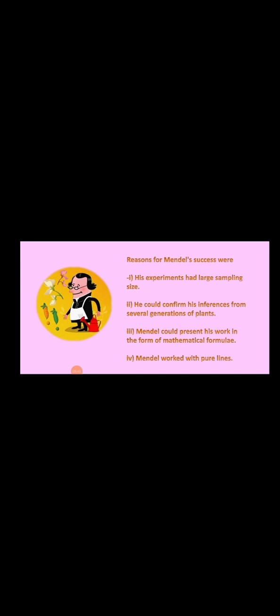The fourth point is that Mendel worked with pure lines. Pure lines means homozygous plants, so he worked on homozygous plants, which ensured consistency and clarity in his experimental results.